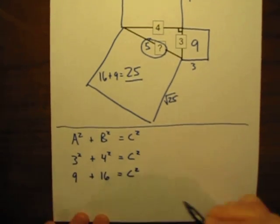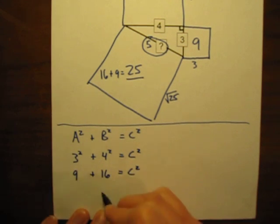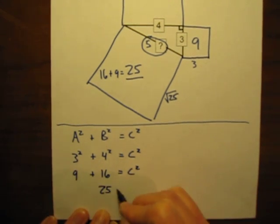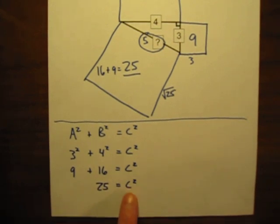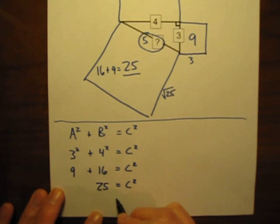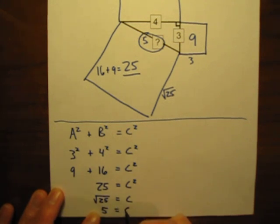Equals c squared. What's 9 plus 16? Well, that's equal to 25. Equals c squared. And if c times c equals 25, then c all by itself must be the square root of 25, which is just simply 5.